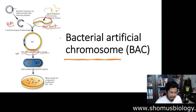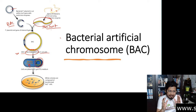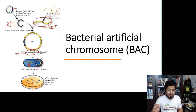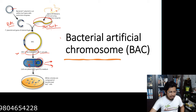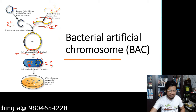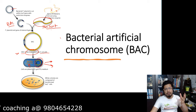Once inside the host cell, the BAC coexists alongside the normal bacterial genome. The par genes ensure the BAC is segregated and transferred to daughter cells upon cell division, utilizing the origin of replication present on the BAC. In the bacterial culture plate, we see two types of colonies — blue and white — and based on the destabilization of lacZ, we can identify which colonies carry our target DNA.